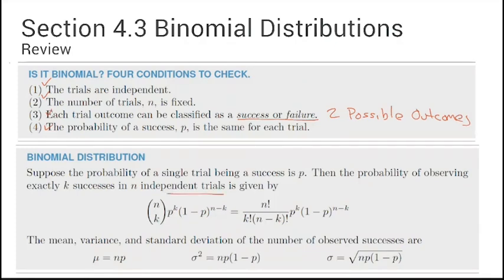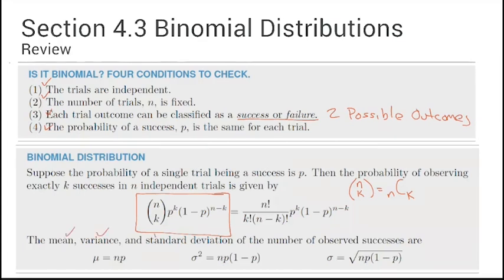We used this formula to calculate the probability of having k successes in n trials, where the nk — in your calculator it's nCk. We've used this formula before. The new formulas we have not used yet are to find the mean, variance, and standard deviation of a binomial distribution. The mean is the number of trials times the probability of success.